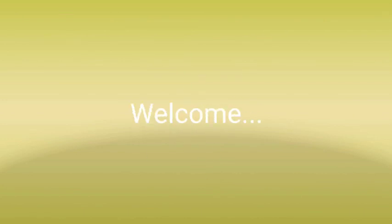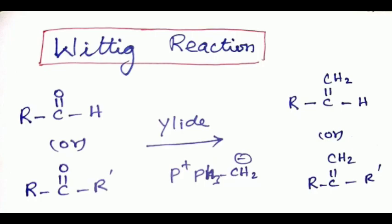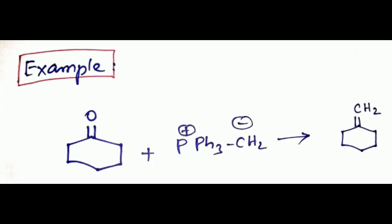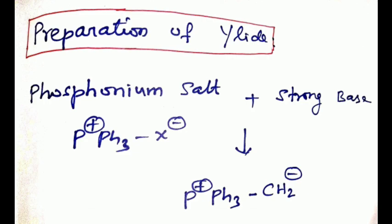In this video we will discuss the Wittig reaction. The reaction of an aldehyde or ketone with an alkylidene triphenyl phosphorane — that is, the Wittig reagent, phosphorus ylide, or phosphonate — to form an olefin is known as the Wittig reaction. For example, cyclohexanone combined with a phosphorus ylide (P⁺Ph₃CH₂⁻) forms an olefin.